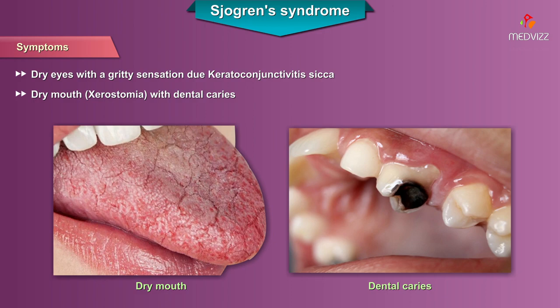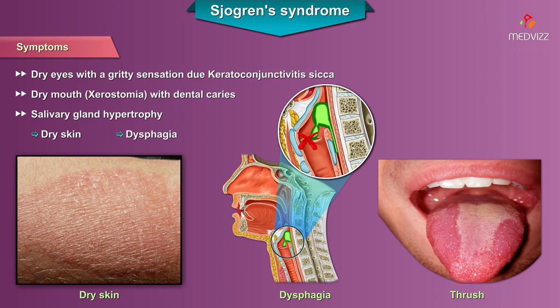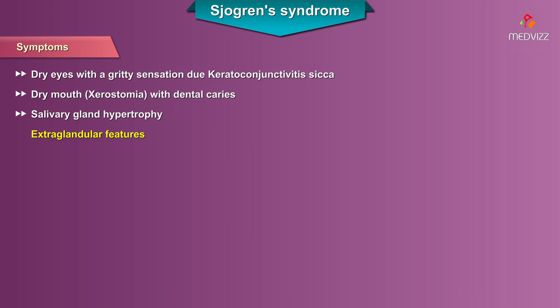Dry mouth, otherwise termed xerostomia, presents with dental caries and salivary gland hypertrophy — of which the submandibular gland is most commonly affected. Dry skin, dysphagia, and thrush can also be seen in patients afflicted with Sjogren's syndrome.